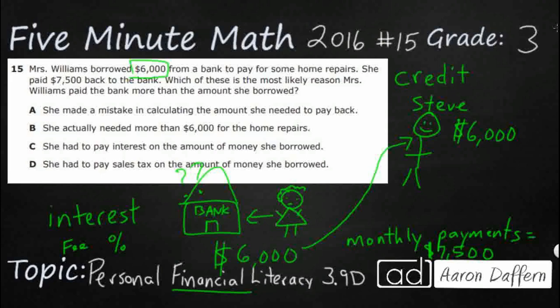Let's look at our answer choices. Answer A: she made a mistake in calculating the amount she needed to pay back. No — no one is going to make a $1,500 mistake. She is having to pay back more because of the interest charged on the loan so the bank could make money. Answer B: she actually needed more than $6,000. Nope — the $6,000 went straight to Steve, so we're good there.